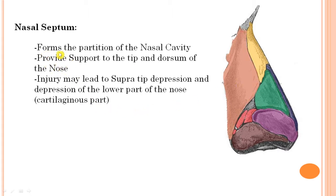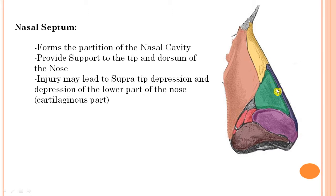The functions of the nasal septum are: partition of the nasal cavity, and support of the tip and dorsum of the nose. If there is any injury to the septal cartilage, since it supports the dorsum of the nose, a depression of the tip occurs — this is called supra-tip depression, as the support is lost and the tip droops downward. Furthermore, since the septum is attached to the lateral cartilage, any deformity of the nasal septum will also cause deformity in the lateral cartilage, resulting in depression of the lower part of the nose.